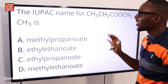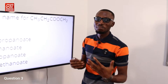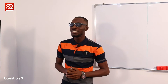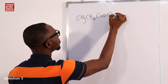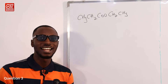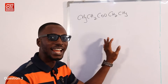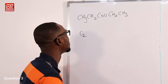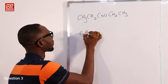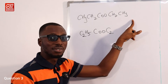Question three: the IUPAC name for CH₃CH₂COOCH₂CH₃ is — let's replicate this on the board. So we have CH₃CH₂COOCH₂CH₃. This is definitely an ester formed from esterification, which is the reaction between an alkanol and an alkanoic acid to form an ester. Putting it together: the left side gives C₂H₅ and the right side also gives C₂H₅, with COO in between.